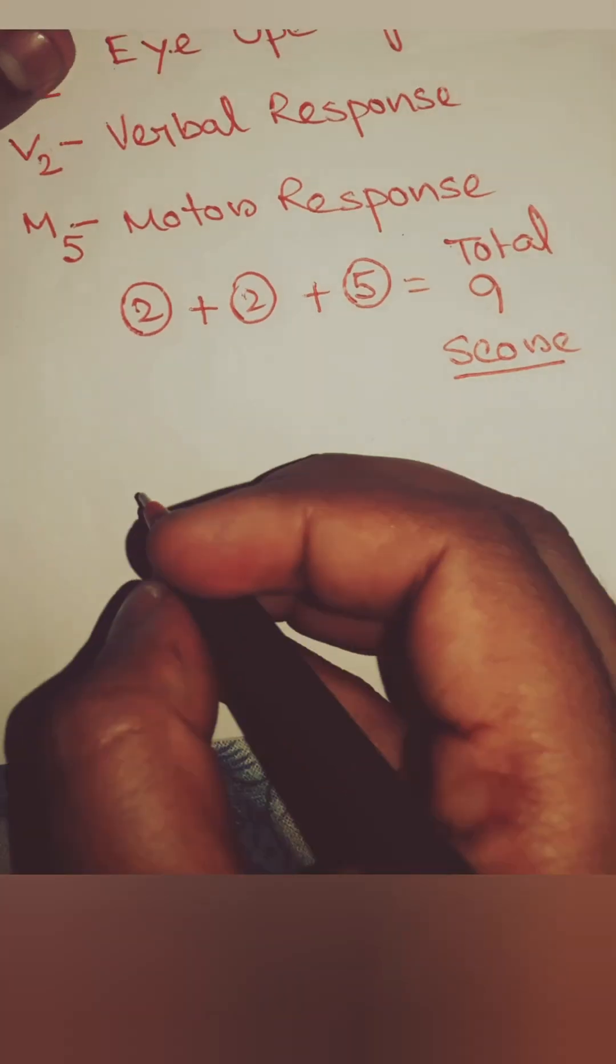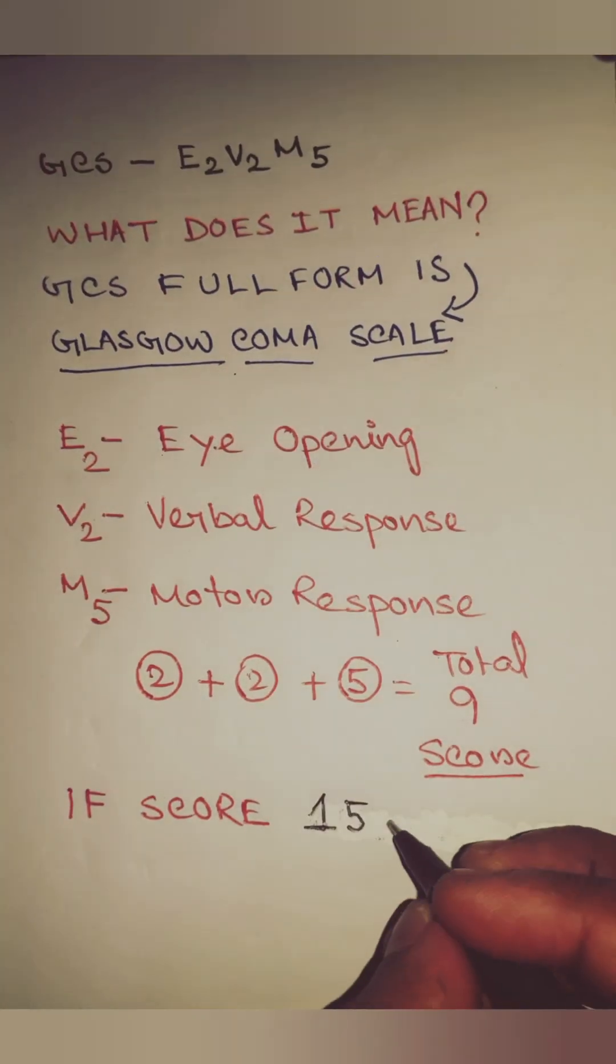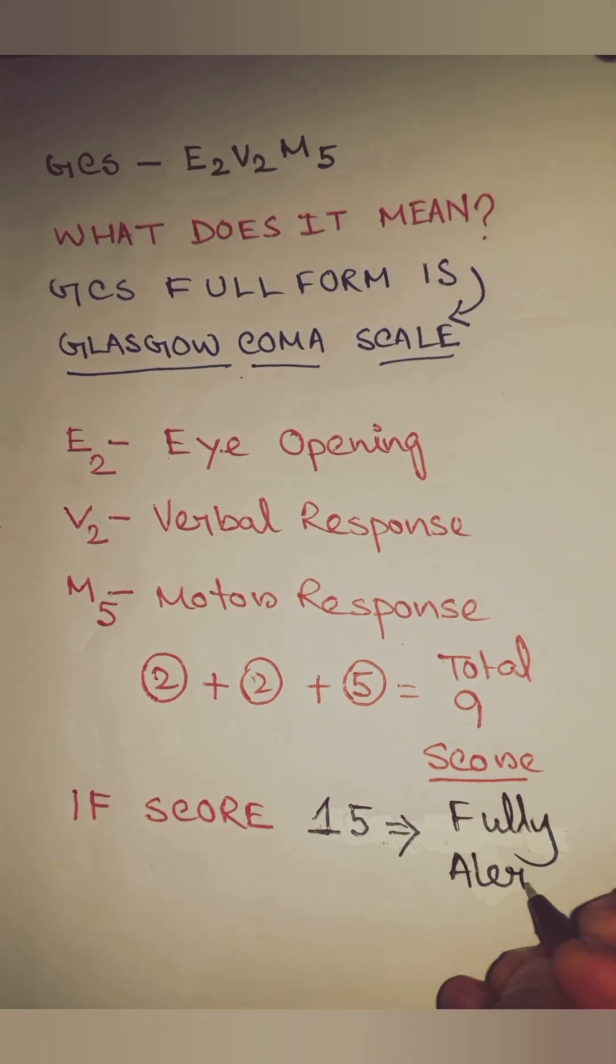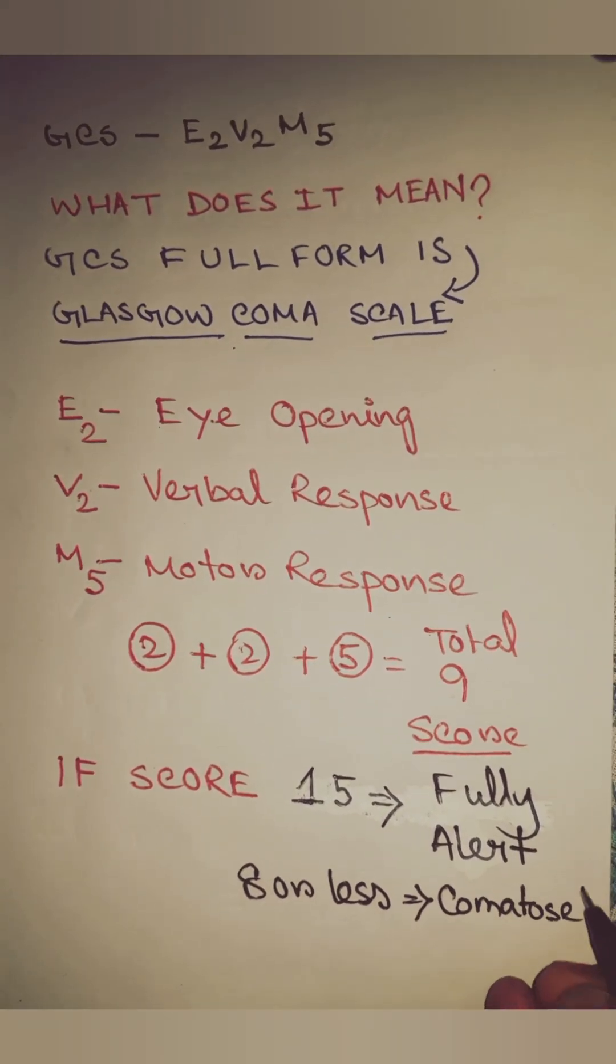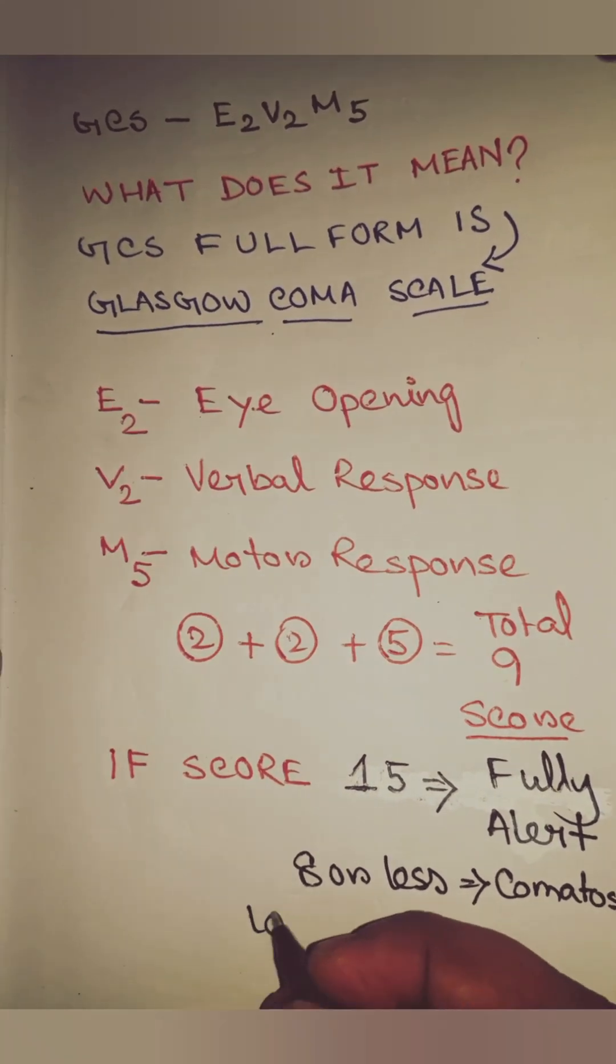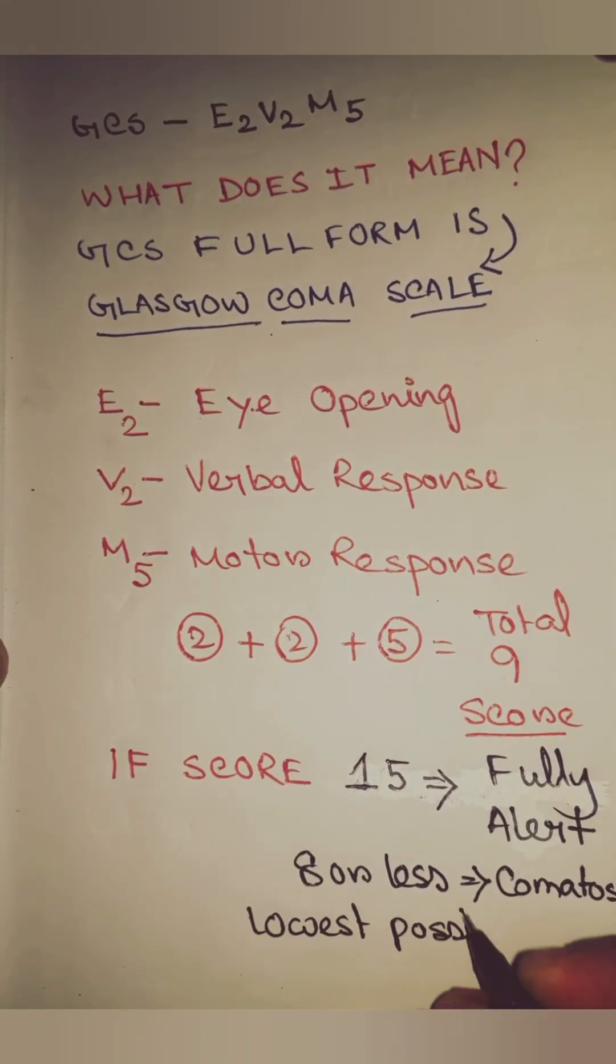If GCS score is 15, that means the patient is fully alert. The score 8 or less means the patient is comatose. The lowest possible score is 3.